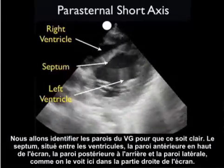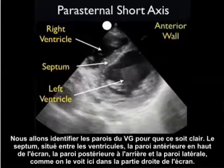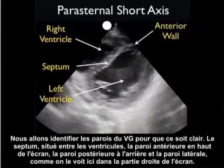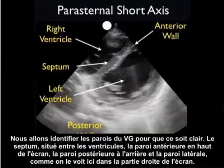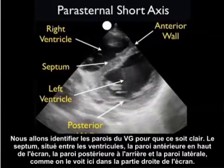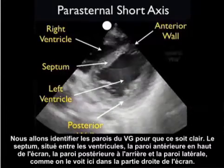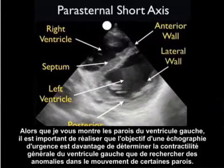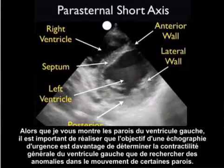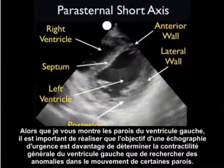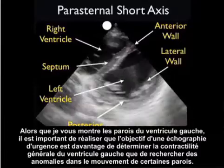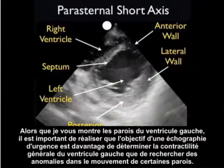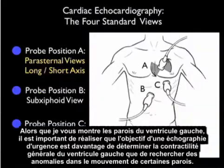For learning purposes we'll identify the walls of the LV: the septum in between the ventricles, the anterior wall to the top of the screen, the posterior wall to the back, and the lateral wall towards the right portion of the screen. While identifying these walls is useful, the goal of emergency echo at the bedside is to determine overall left ventricular contractility rather than looking for segmental wall motion abnormalities.